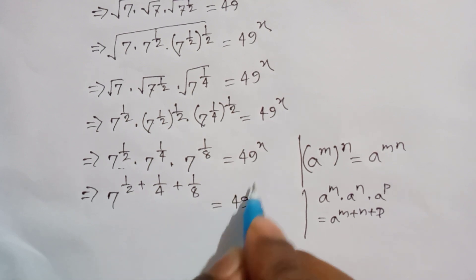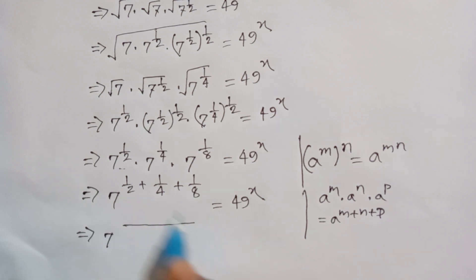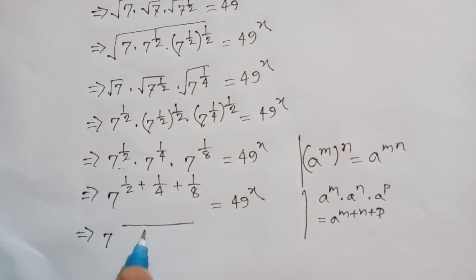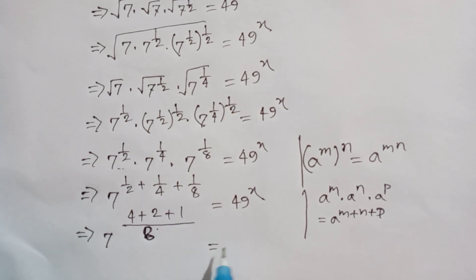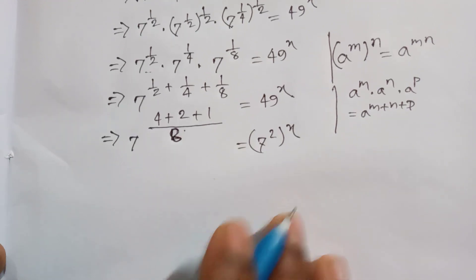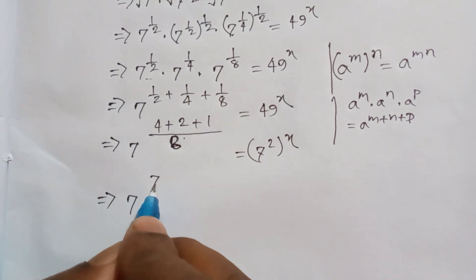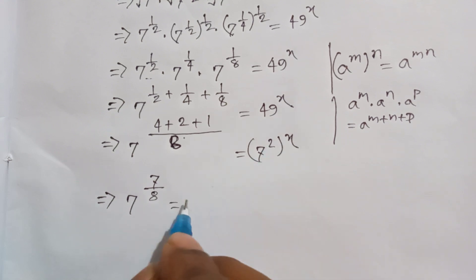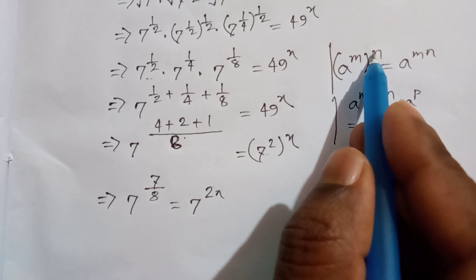Or 7 all to the power — now we take the LCM. The LCM is 8: 2 divided by 8 is 4, plus 4 divided by 8 is 2, plus 8 divided by 8 is 1, is equal to — and it can be written as 7 squared, whole to the power x. And then 7 to the power 4 plus 2 plus 1 is 7 divided by 8, is equal to, so it can be written as 7 to the power 2x, according to the formula a to the power m whole to the power n is a to the power mn.